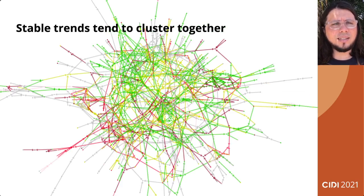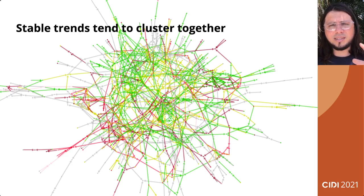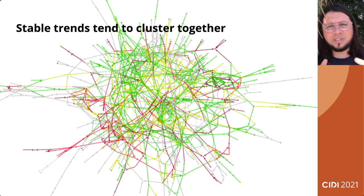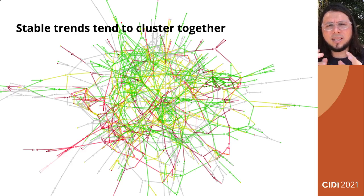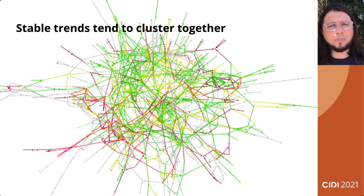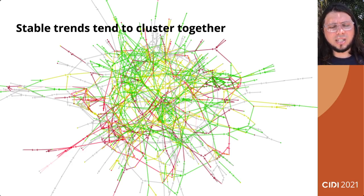In this other analytical graph, you can see that stable trends tend to cluster together, forming some kind of boundaries where it's difficult to penetrate with new trends. The green trends are all connecting together, forming a well-structured circle, and it's difficult for the red ones — the new trends — to penetrate these circles and get linked back. They can link to stable trends, but to become stable themselves, they need to be linked by other trends.